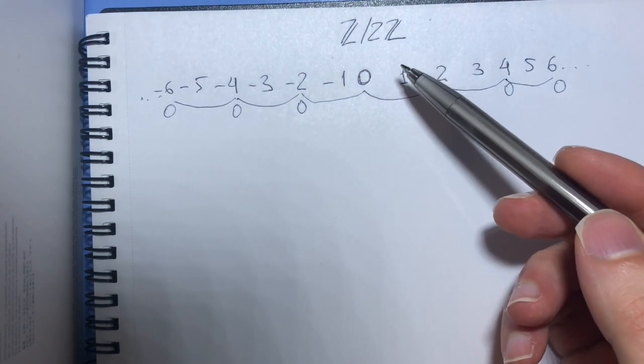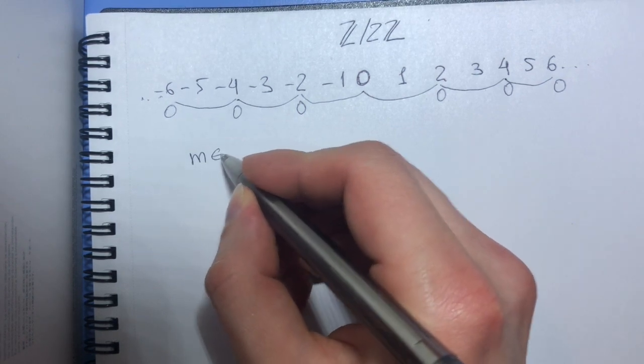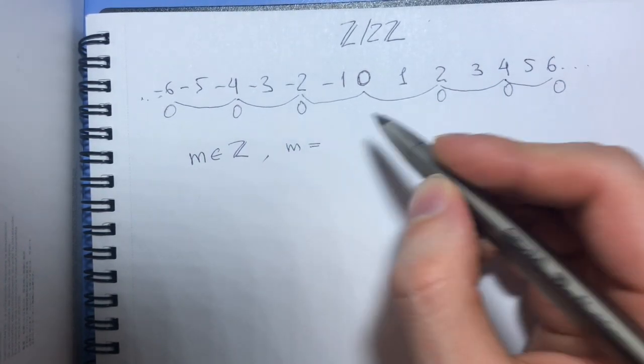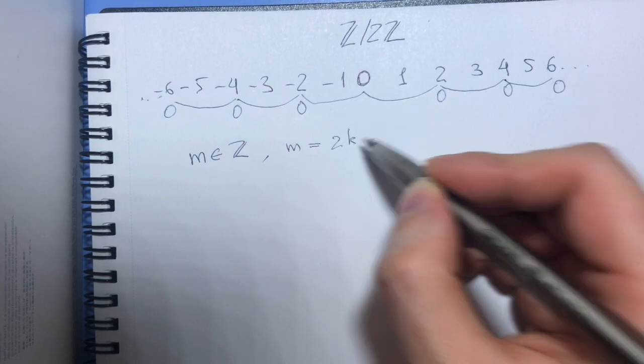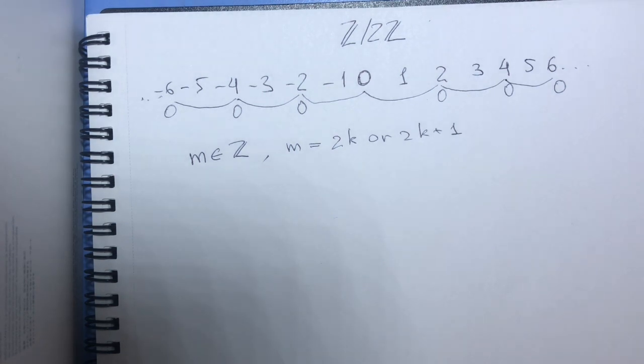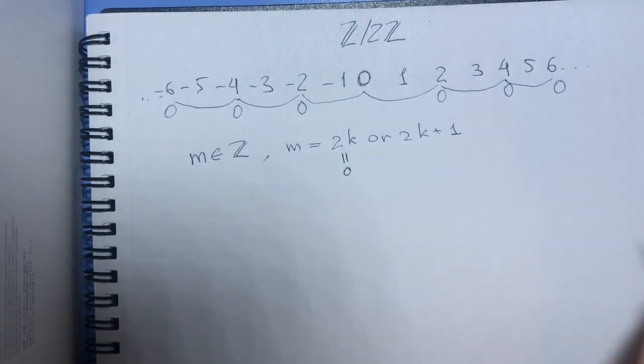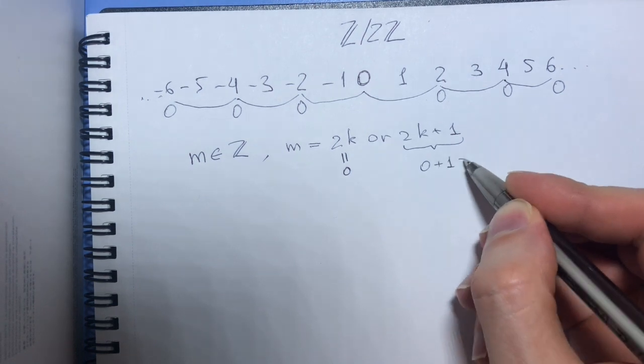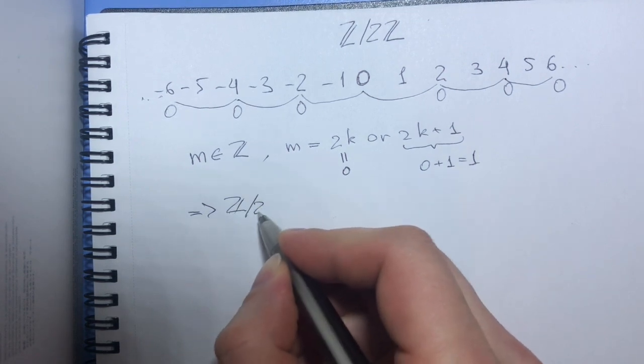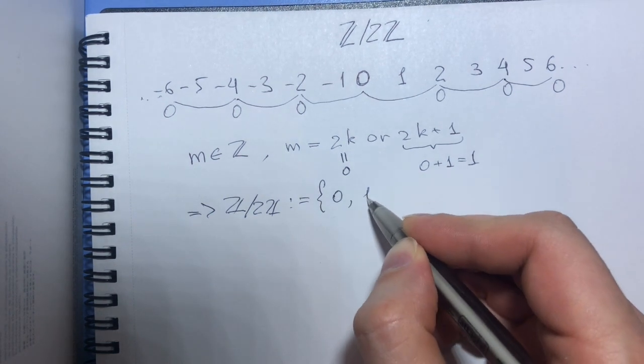So what does this new set look like? What elements can we have? Well, suppose we have some abstract integer m. m is either of the form 2k or 2k plus 1, right? Every integer is either even or odd. But by our identification, 2k is 0 and this becomes 0 plus 1, which is 1. So the conclusion that we make is that in Z mod 2Z, we essentially have two elements: 0 and 1.